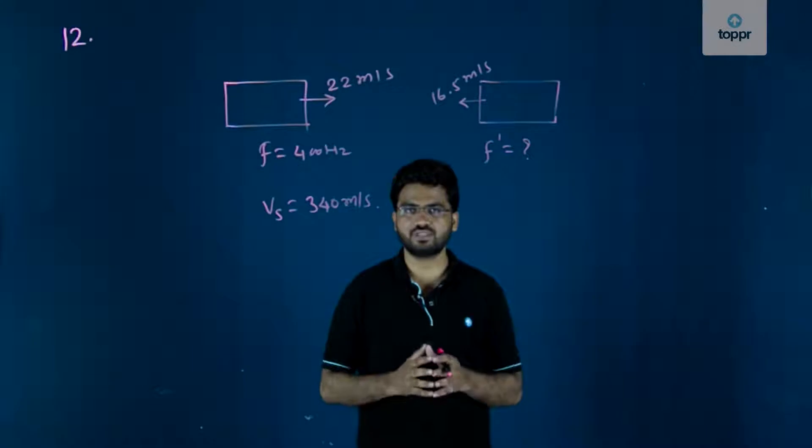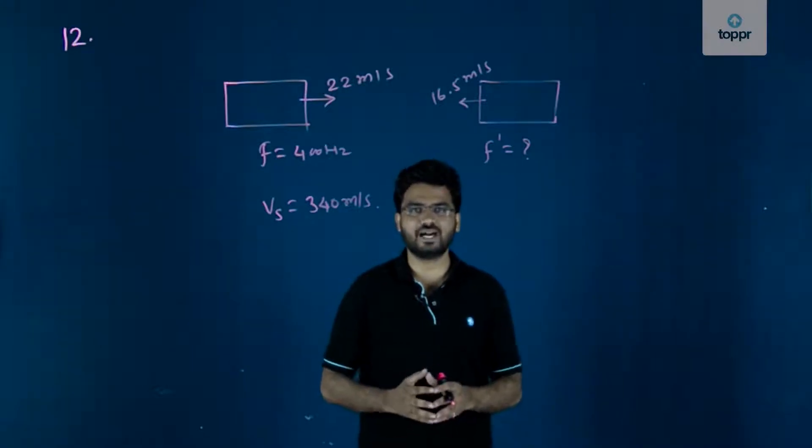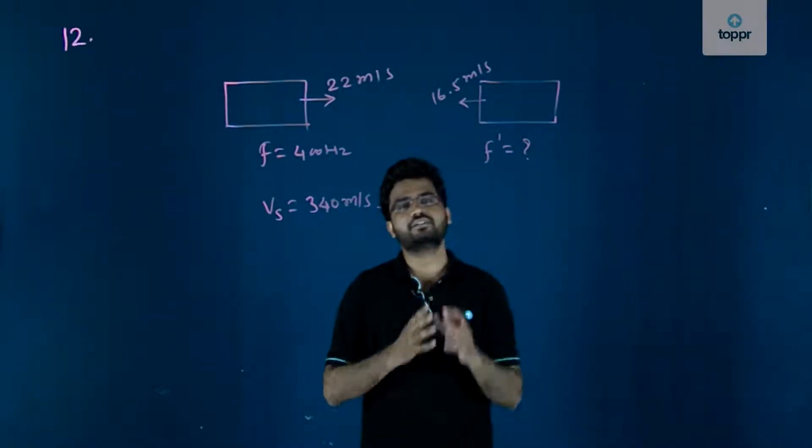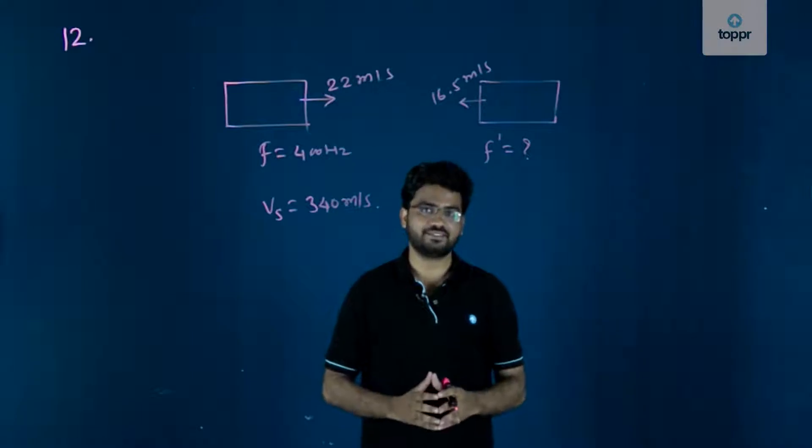So, in this question you have to find the frequency heard by the driver of the second car, that is the apparent frequency, right.